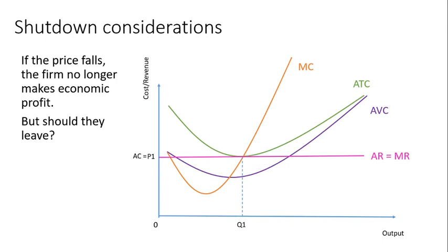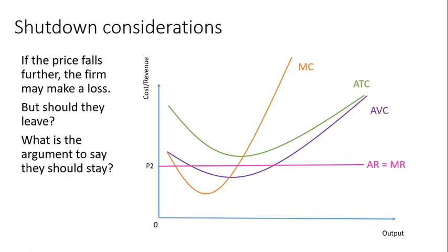If the price goes down further, the firm will make a loss. We can calculate the loss using the loss-minimization quantity — still where MC equals MR — and identify the loss rectangle. But should they still stay? There is an argument that they should, because they're still making what's known as contribution. From zero to Q2 and zero to P2, that whole area is revenue, and the area between price and AVC is contribution — meaning price exceeds variable costs.